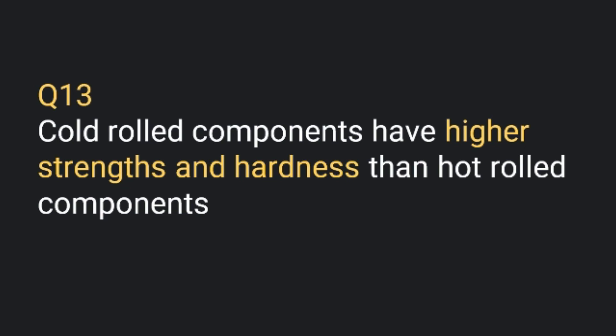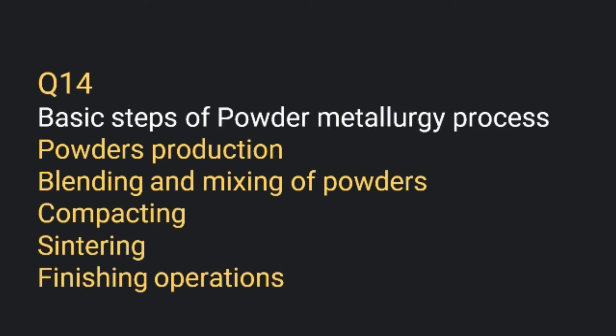Cold-rolled components have higher strength and hardness than hot-rolled components. The basic steps of the powder metallurgy process are: powder production, then blending and mixing, then compacting, then sintering, and finally finishing operations.